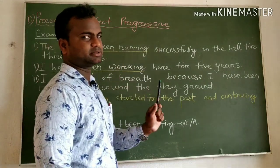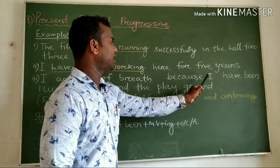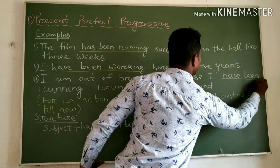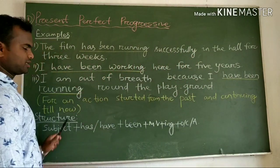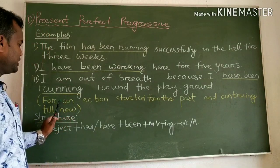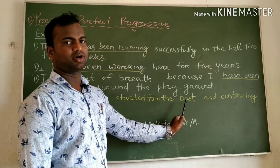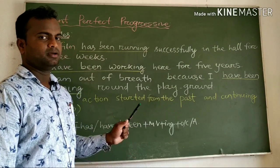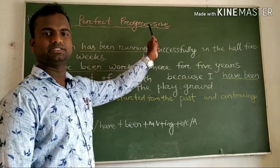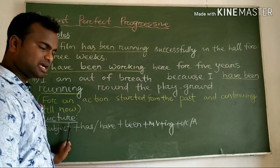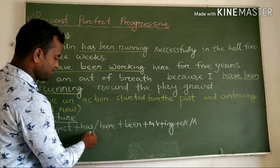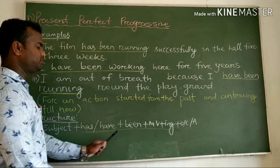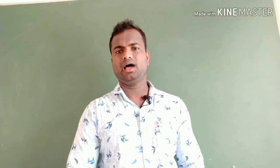Next example: I am out of breath because I have been running around the playground. This tense is used for an action started in the past and continuing up to the present. I have been running around the playground — this is an example of present perfect progressive tense.